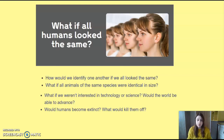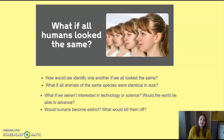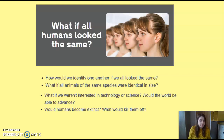Think about the pros and the cons — the good things and the bad things if everybody was identical, the same blood type, like clones of each other. How would we identify one another if we all looked the same? How would we know who was who? If you've been watching the David Attenborough programmes, he talks about how animals identify each other, because animals all look very similar to each other. What would happen if we were all the same size? Would that cause problems, or would that be a good thing?